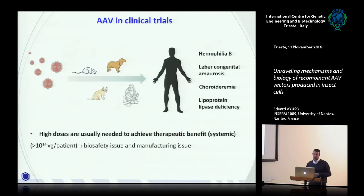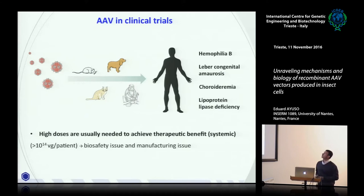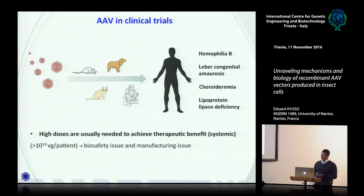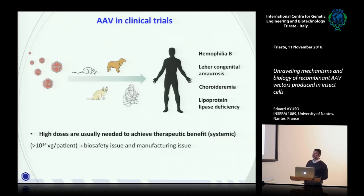AAV vectors are increasingly used in gene therapy. For many diseases, they have been shown to be very effective in animal models, and this has translated to good results in human trials — for instance, liver trials for hemophilia, eye trials, and metabolic diseases. However, in cases where systemic applications are needed, there are therapeutic benefits but we need really high doses of vectors — more than 10¹⁴ vector genomes per patient.